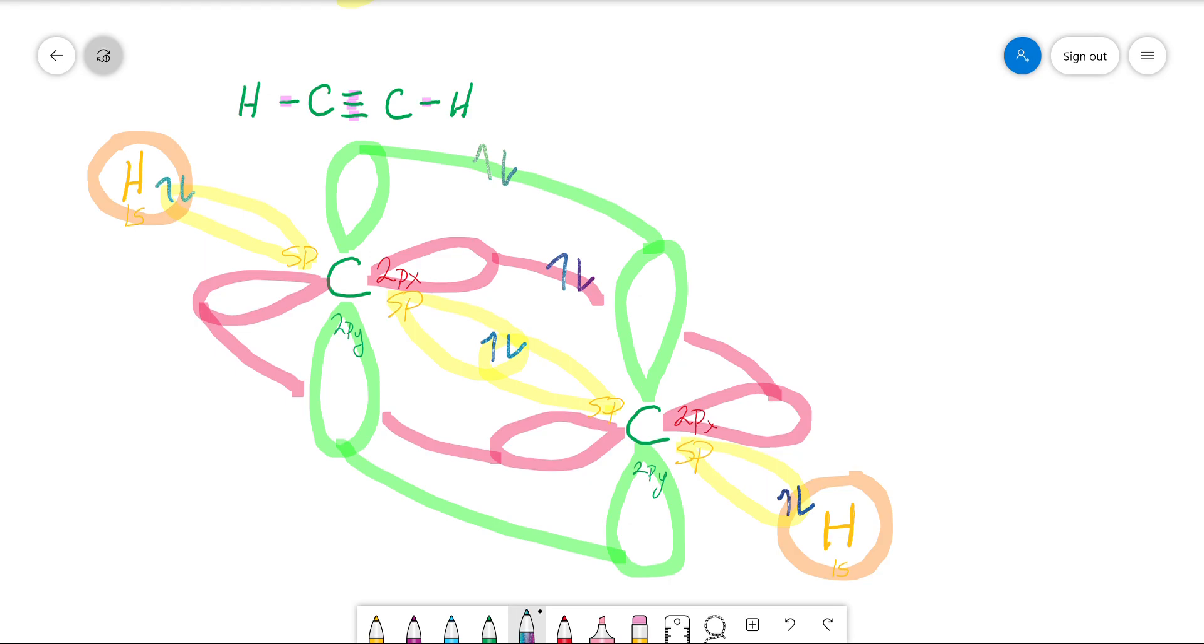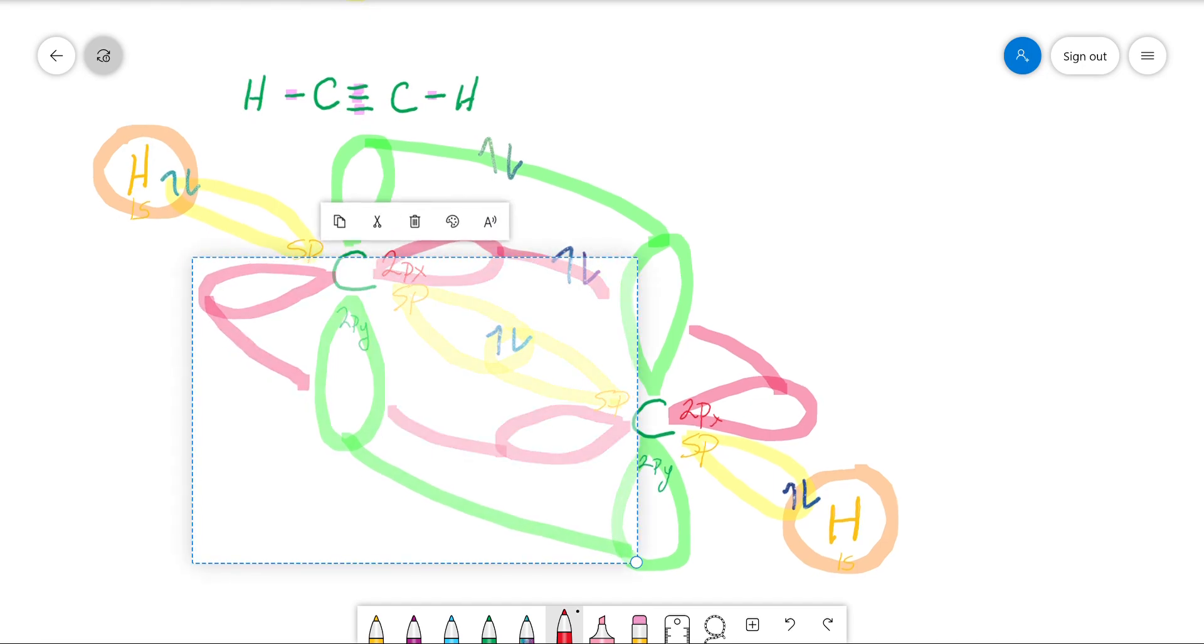So let's label sigmas and pis. Okay, sigma bond, sigma bond. Let's change the thickness of that pen just so it shows up a little bit better. Sigma bond, sigma bond, sigma bond.